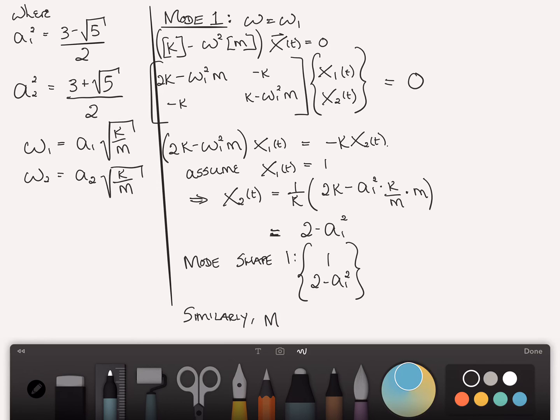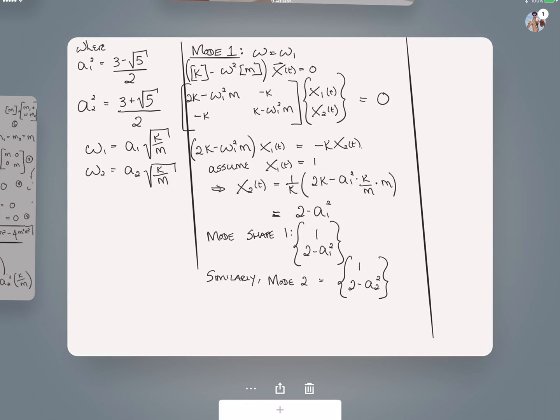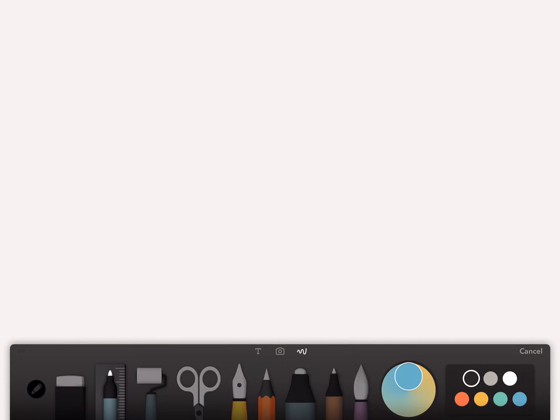And similarly, mode 2 is equal to 1, 2 minus a2 squared. Now, these modes are not normalized. You can normalize it if you want, although it wasn't required. But now you have your modes and your frequencies. Let me write it on the following page, just so it's neat.